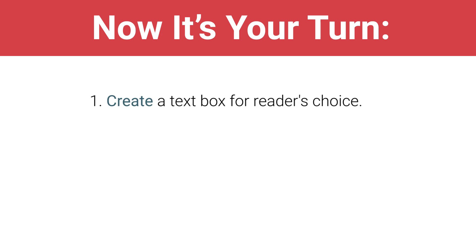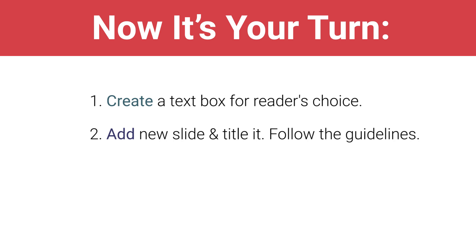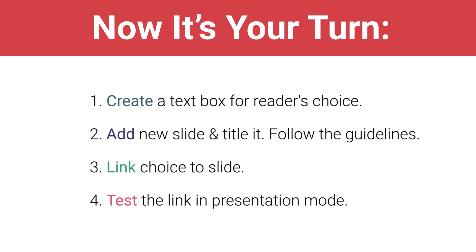Now, it's your turn. Create a text box and type in a choice for the reader. Add a new slide and title it with the choice. Follow the guidelines: always write in second person — you, your, yours — and always include the choice in the title. Link the choice to its slide. Test the link in presentation mode. Once you've added and linked one slide, move on to the next video to continue building your story.